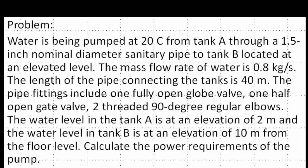The length of the pipe connecting the tanks is 40 meters. The pipe fittings include one fully open globe valve, one half open gate valve, and two threaded 90 degree regular elbows. The water level in tank A is at an elevation of 2 meters, and the water level in tank B is at an elevation of 10 meters from the floor level.